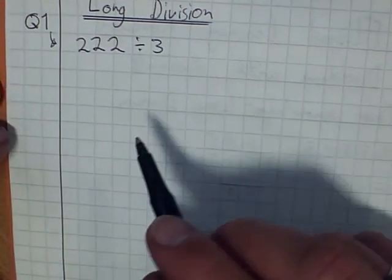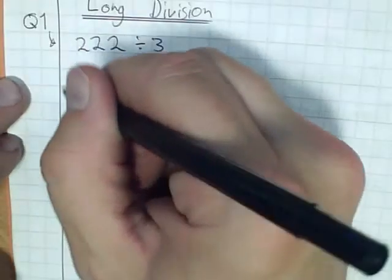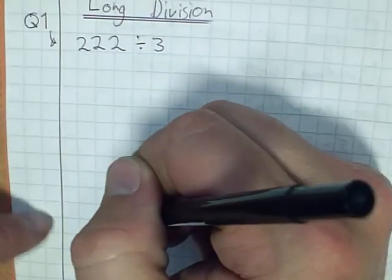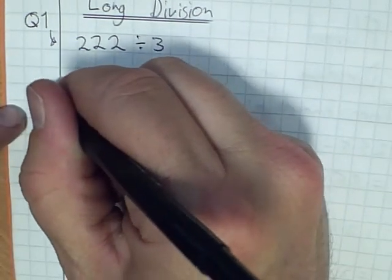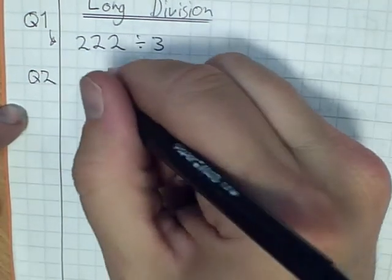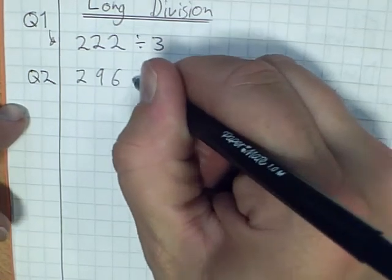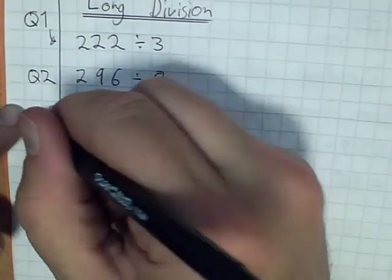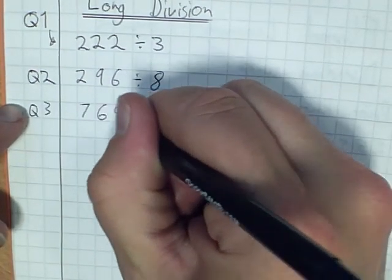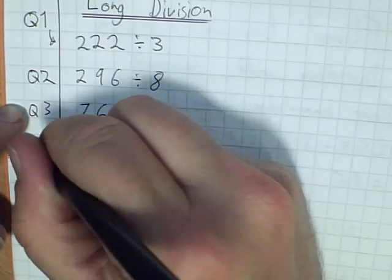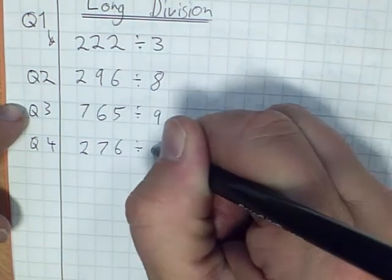Complete it. And then you're going to need a bit of space, and only once you've done that, go on to question 2. I'm going to write all the questions here, but I don't want you to write them all one under another. I want you to write this one, do the question, and then write the next one. So question 2 will be 296 divided by 8. Question 3: 765 divided by 9. And question 4: 276 divided by 12.